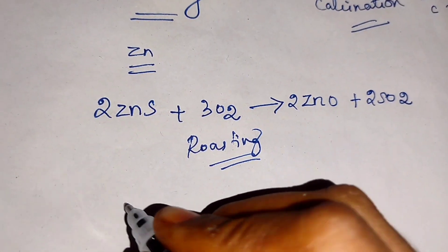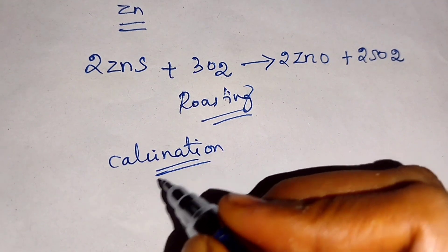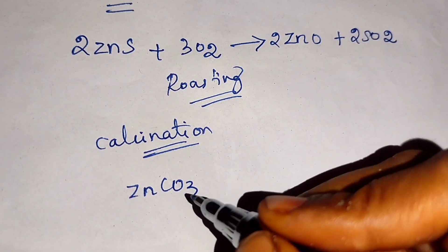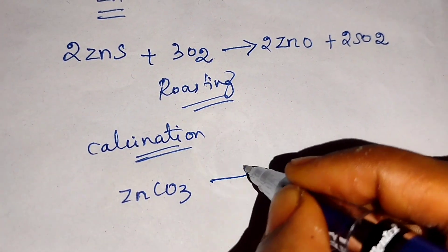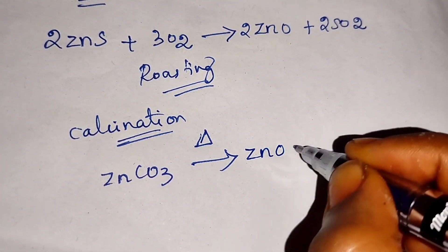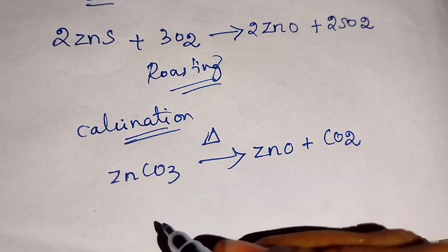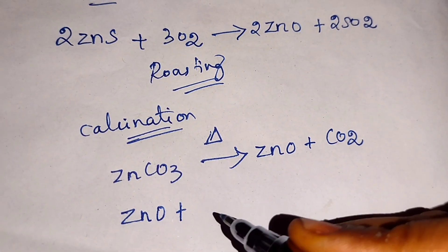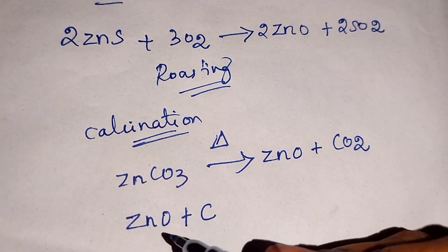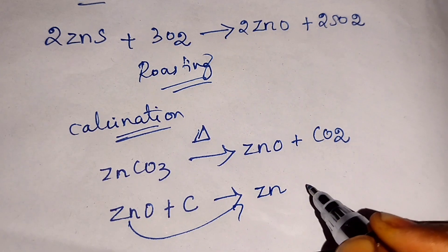Next is the calcination process. Calcination means I am taking zinc carbonate - the same metal but in carbonate form. I heat the zinc carbonate, and it is converted into zinc oxide plus carbon dioxide is liberated. Then this zinc oxide is reacted with a strong reducing agent - carbon. Carbon is a strong reducing agent. Reacting zinc oxide with carbon gives zinc liberated separately and carbon monoxide formed.